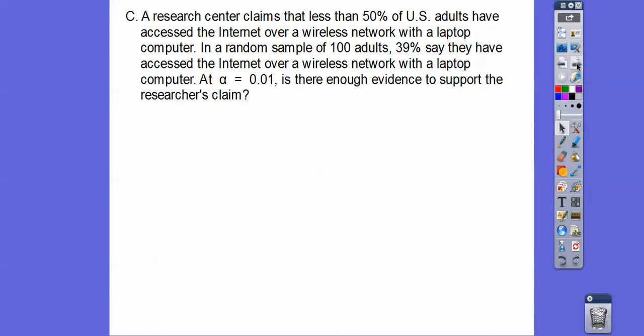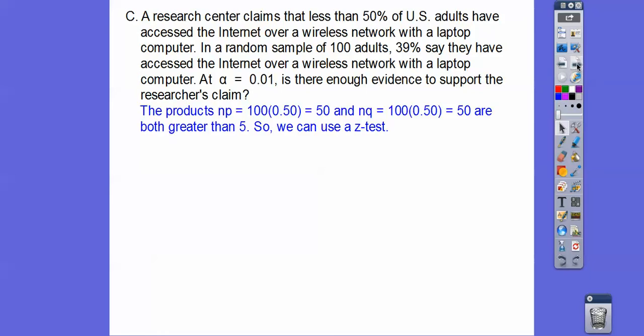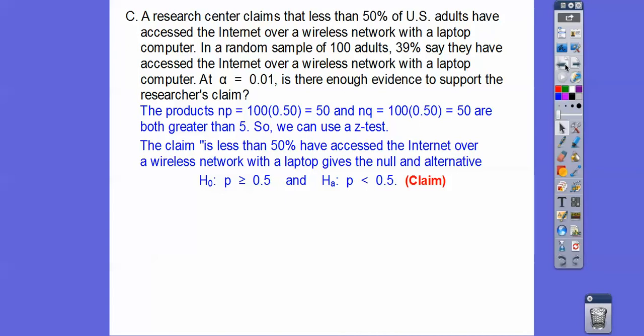A research center claims that less than 50% of U.S. adults have access to the internet over a wireless network with a laptop computer. In a random sample of 100, 39% say they have access. At the 1% level, is there enough evidence to support the researcher's claim? Make sure NP and NQ are both greater than or equal to 5 - they are, so we can do our Z test.